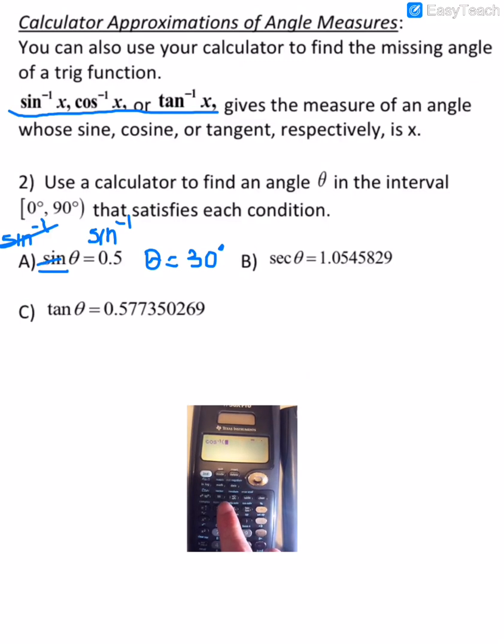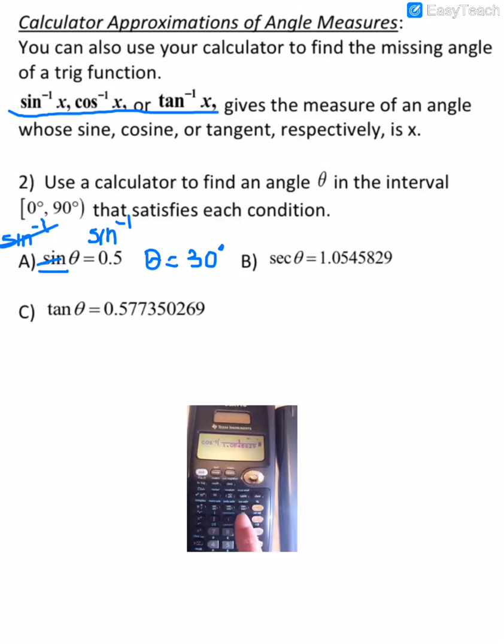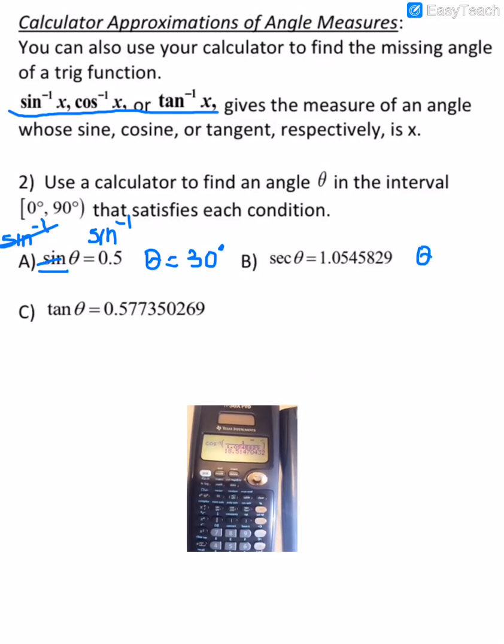Okay, so we can put it in as a fraction. So, we have our little fraction button, and it's 1 over what they've given us, 1.0545829. And then scroll over to get out of the denominator, and we get 18.5 degrees for theta.